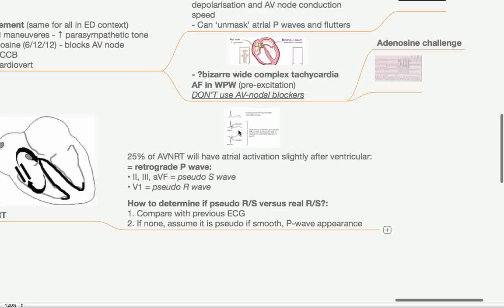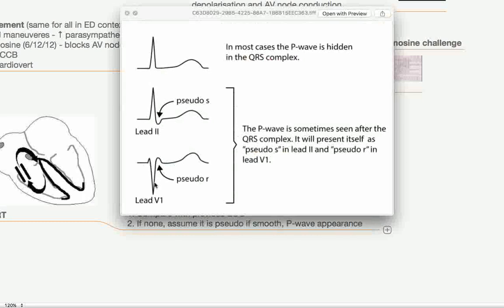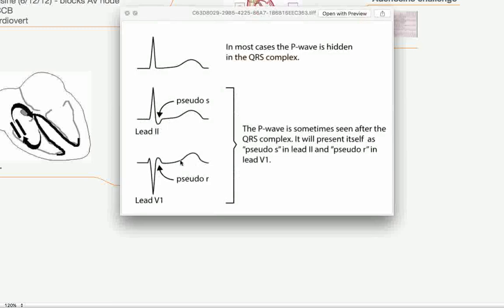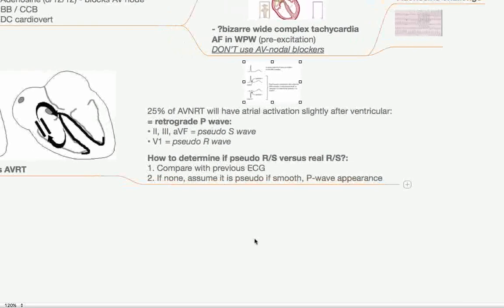And these are actually known as pseudo R waves or pseudo S waves illustrated here. In lead one, you might have sort of an RSR. And actually, that's not really an R wave because you can see it's not as spiky. That's actually a P wave. Similarly here in lead two or three or AVF, you might have an R and then an S. But actually, is that an S? Nope, it's a pseudo S. So that's actually a P wave coming after the QRS. But it's kind of buried in. So it's difficult to see. And if you want to try and figure out, is this a pseudo R wave or a pseudo S? Was it a real R or a real S? Then compare that ECG with their previous ECG. And if there aren't any ECGs, assume it is pseudo if it's a smooth P wave appearance. Because your P waves typically tend to be quite smooth and rounded. They don't tend to be spiky like this. So you could assume that it could be a pseudo wave.